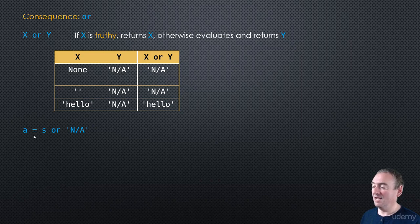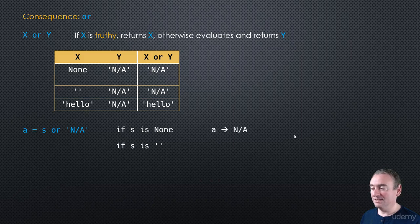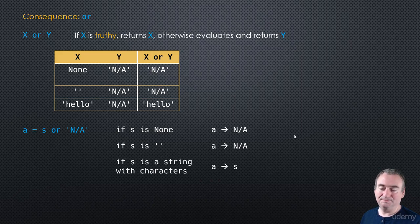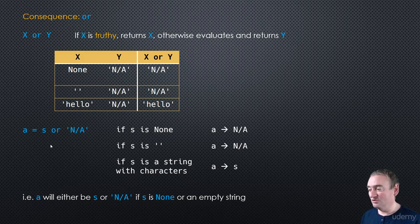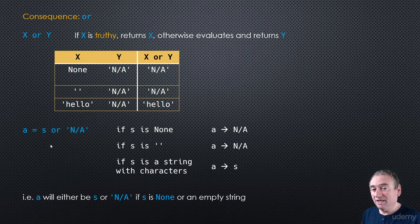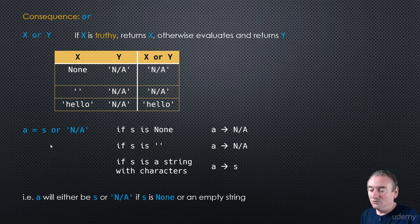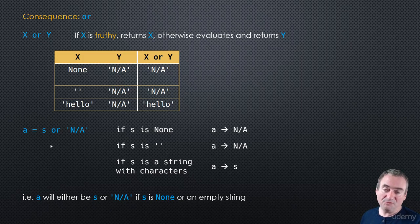So if we write something like a = s or 'N/A', then if s is None we return 'N/A', if s is an empty string we return 'N/A', and if s is a string with characters we just return s. This is basically a way to set up default values for a variable. We may be dealing with a string, but we don't want an empty or None variable, so a = s or 'N/A' ensures a always has a value.